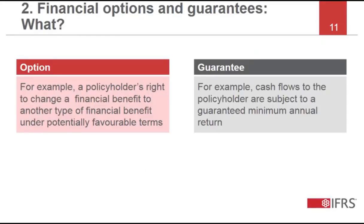The second feature that some contracts with participation features may have is the presence of financial options and guarantees. Financial options and guarantees limit or alter the extent of policyholders' participation in the return of underlying items. One example would be a policyholder's right to change a financial benefit to another type of benefit under potentially favourable terms, or variable cash flows to the policyholder based on underlying items that are subject to a guaranteed minimum annual return.